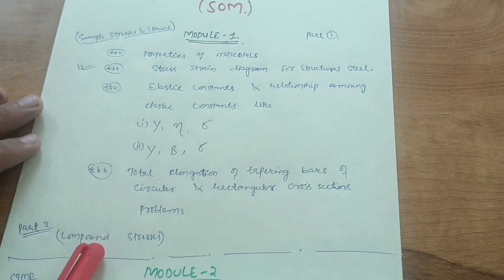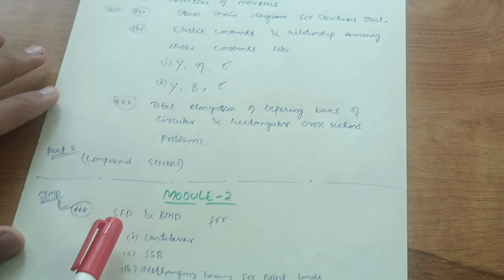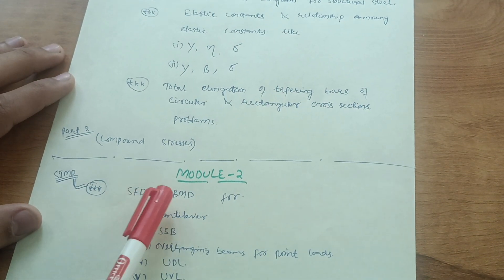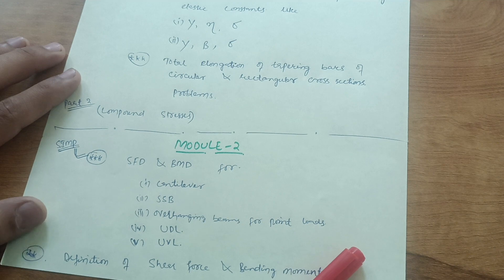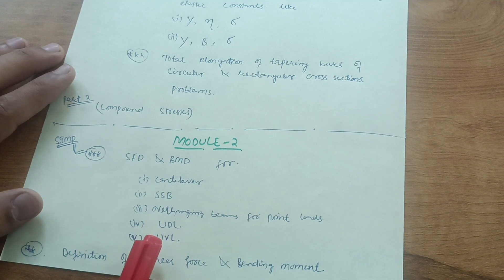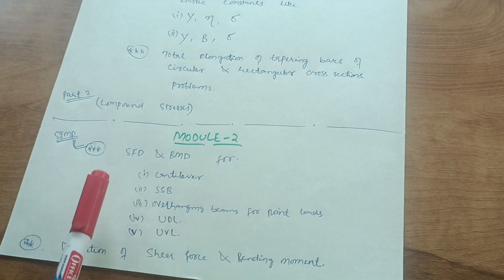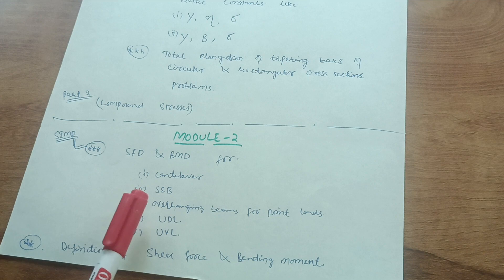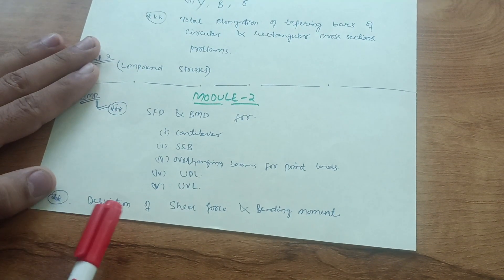Module 2 is the most important module. If you just go through SFD and BMD problems, you will easily cover this module. Shear Force Diagram and Bending Moment Diagram problems for cantilever beams, simply supported beams, and overhanging beams — for point loads, uniformly distributed load, and uniformly varying load — are all covered here. At least 10 marks, and sometimes 20 marks, will definitely come from this module.